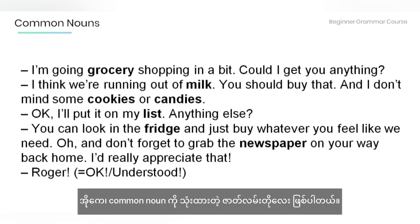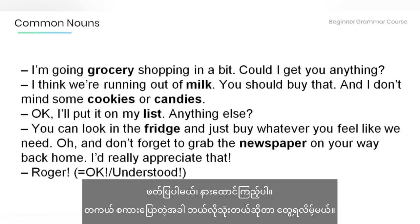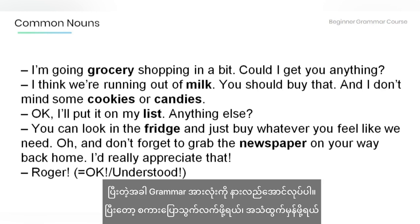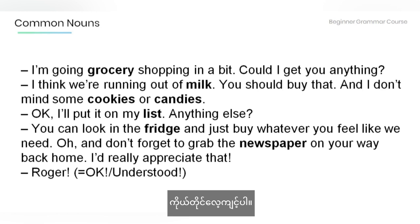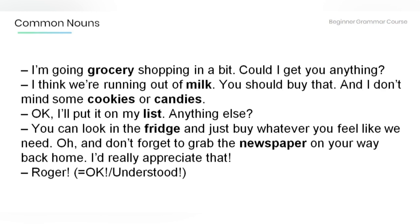Now here is a short story using common nouns. Listen as I read so you see how they are used in real-life conversation. After I'm done, make sure you understand the grammar and read aloud yourself to work on fluency and pronunciation. 'I'm going grocery shopping in a bit. Could I get you anything?' 'I think we're running out of milk. You should buy that. And I don't mind some cookies or candies.' 'Okay, I'll put it on my list. Anything else?' 'You can look in the fridge and just buy whatever you feel like we need. Oh, and don't forget to grab the newspaper on your way back home. I'd really appreciate that.' 'Okay.'